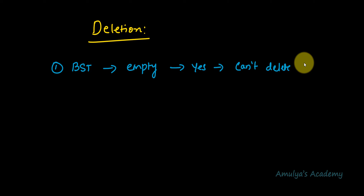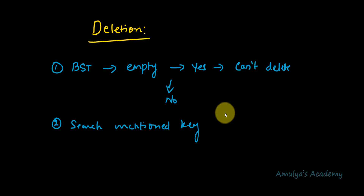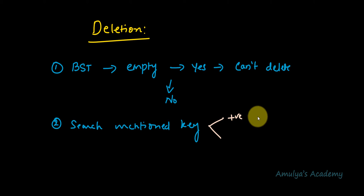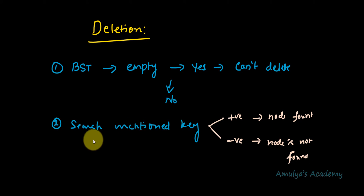The first step in the deletion operation is to check whether the binary search tree is empty or not. If it is empty we can't delete any node — we will print a message 'can't delete'. If it is not empty then we search for the mentioned key. From this search operation we either find the node or print a 'node not found' message. If we find the node then we delete it.